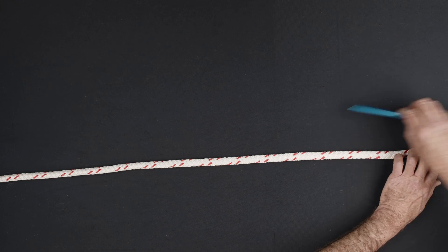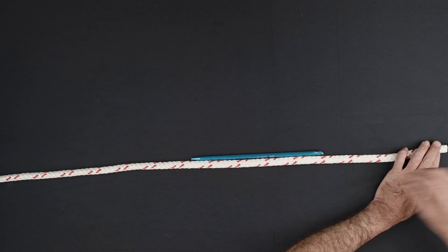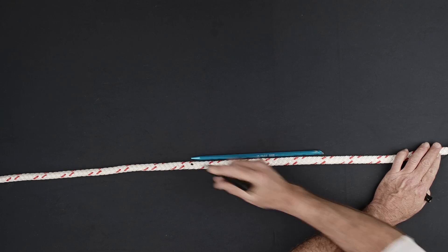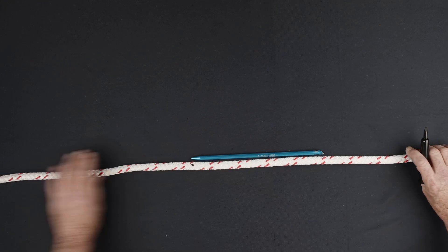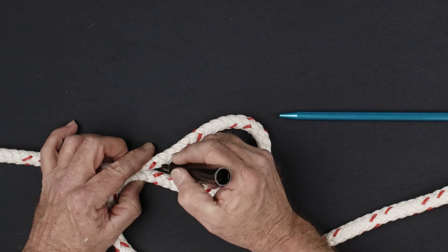Using an appropriately sized fid, make a mark two fid lengths from the end of the rope. Form the desired eye size and make a corresponding mark on the opposite side of the eye.